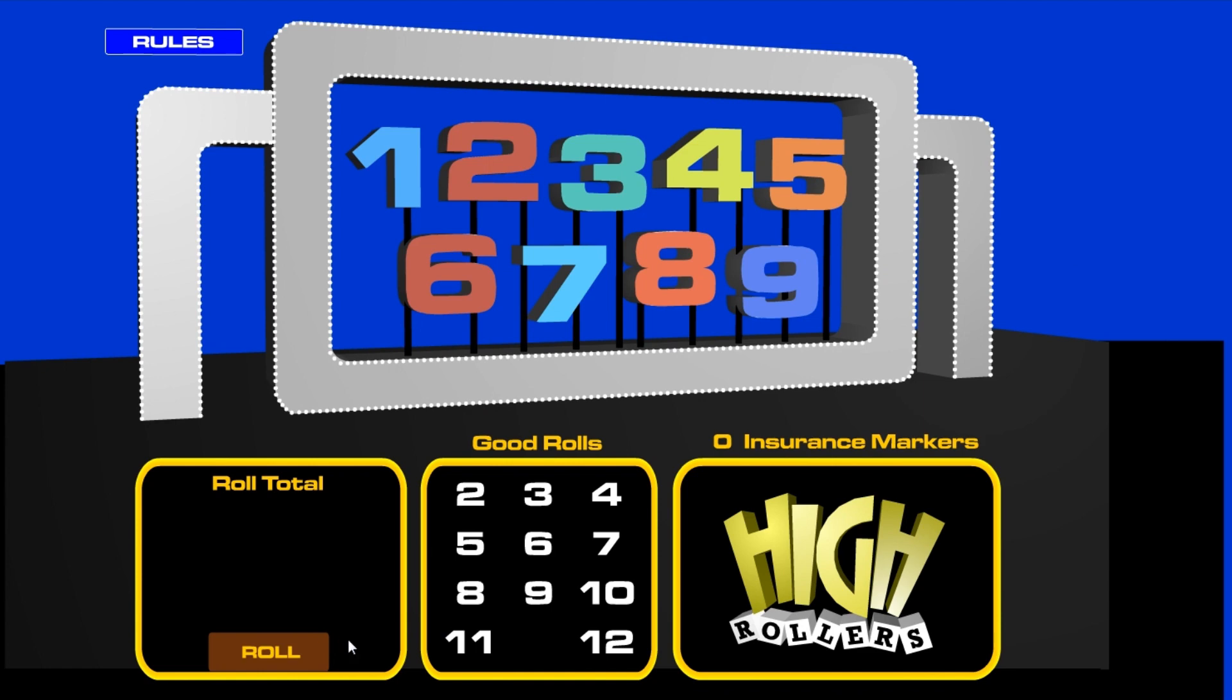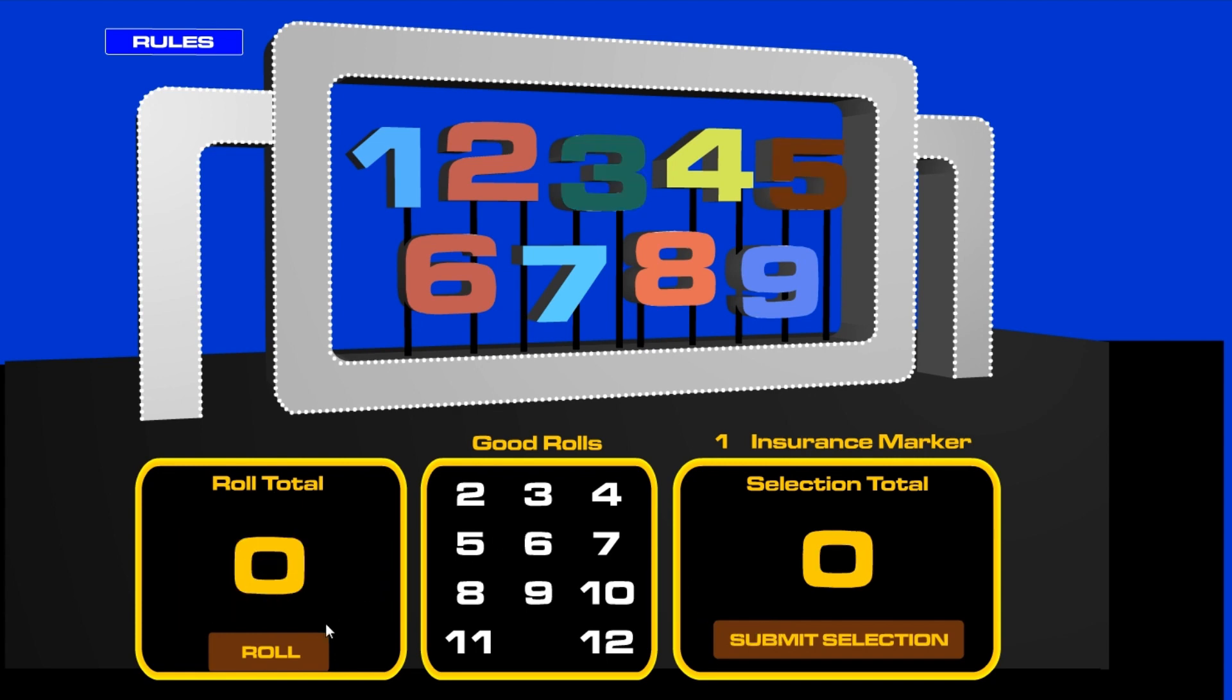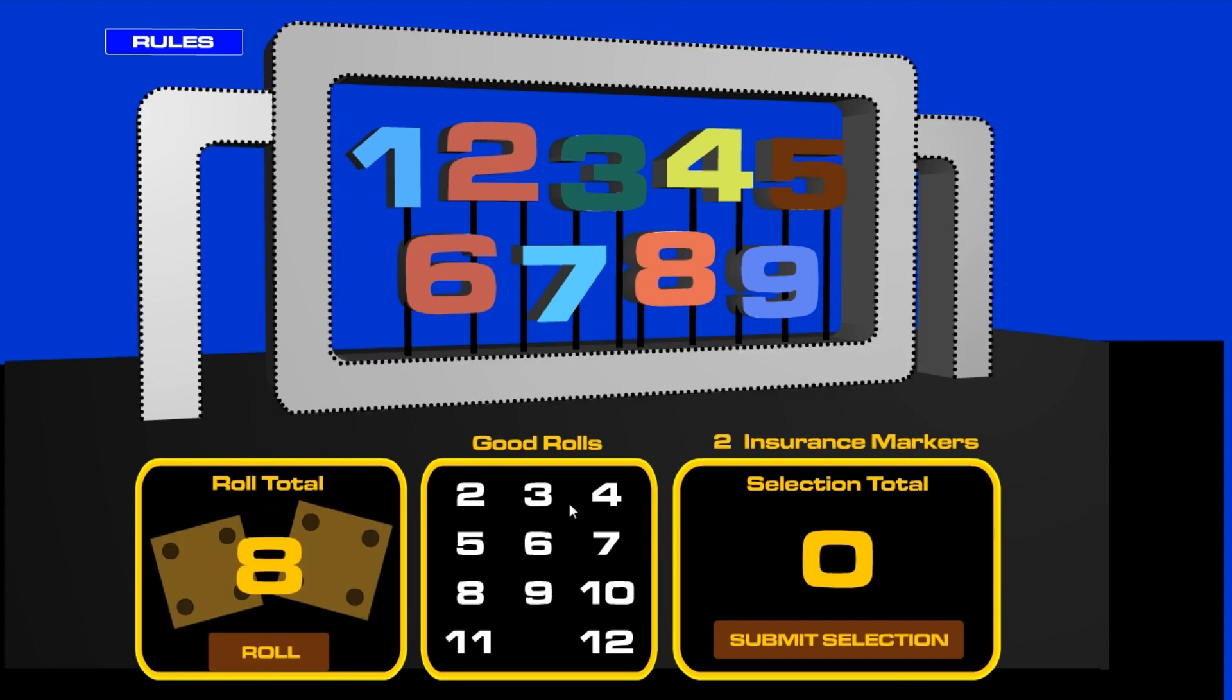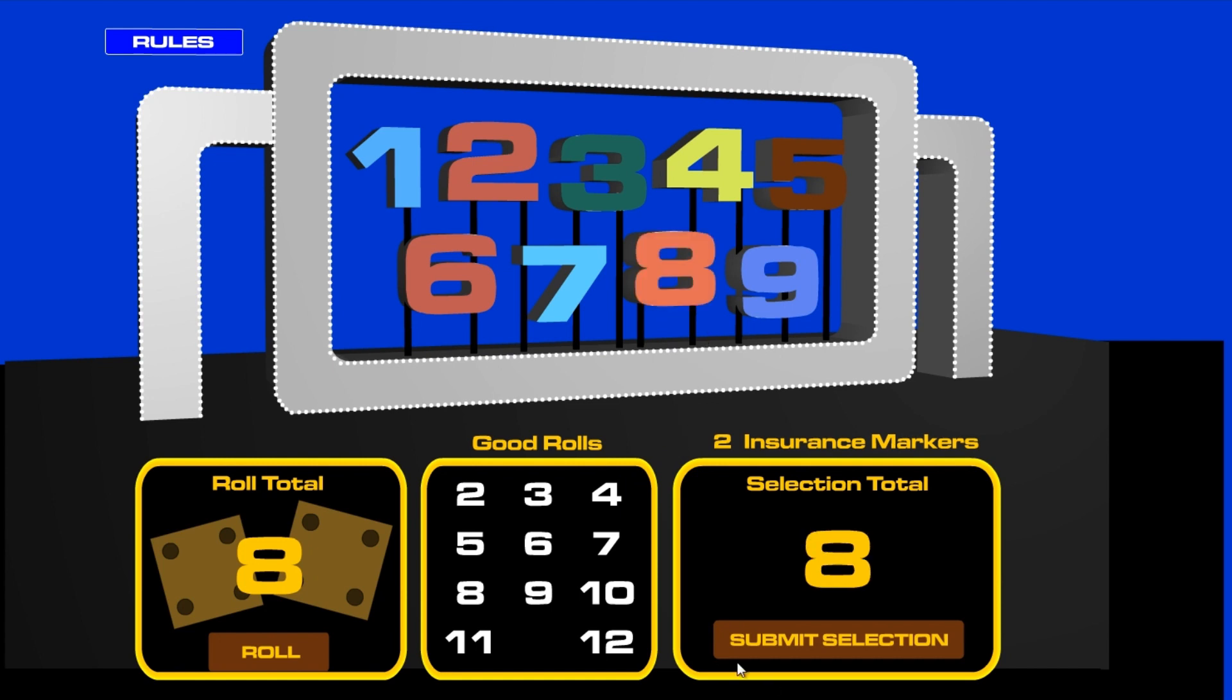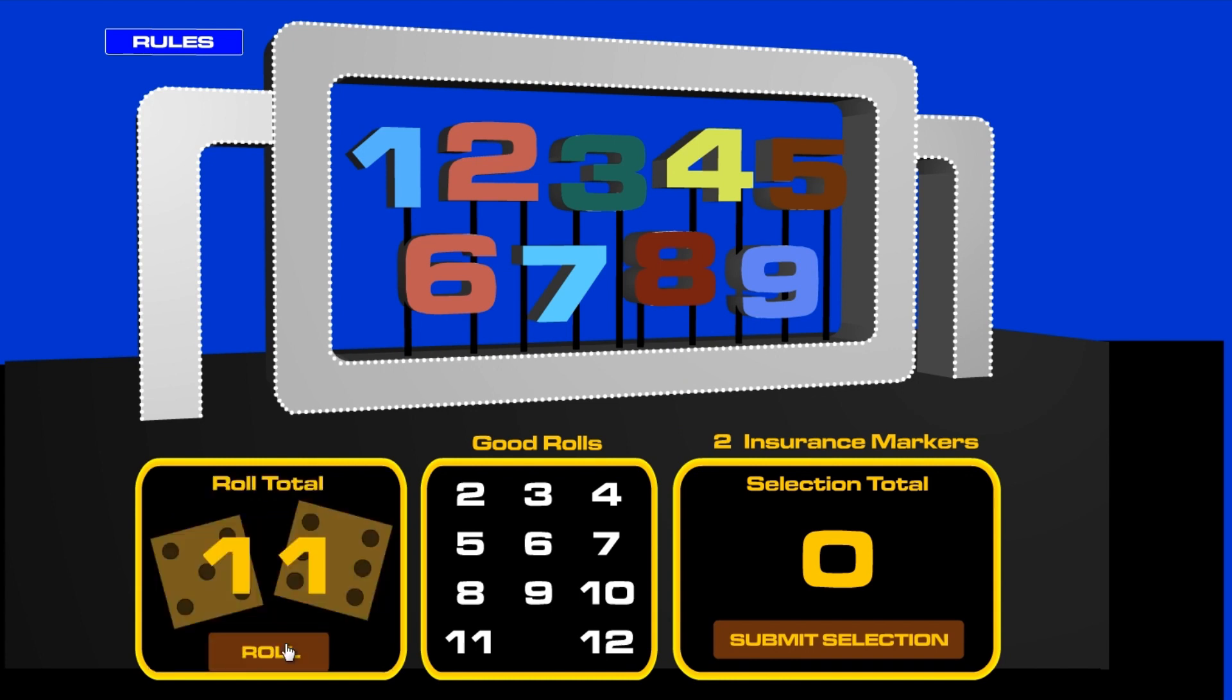All right, we're back here once again at the Big Numbers. We start with an eight, and there is our insurance marker. We'll take off the five and the three, get those two out of the way. Next roll is an eight again and another insurance marker. Next roll is an 11.